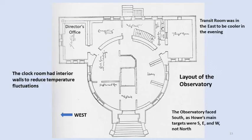When designing the building, Howe put the transit room in the east so it would be cooler at the end of the day and thus more accurate. The clock room had interior walls and double windows to keep it at a more even temperature.